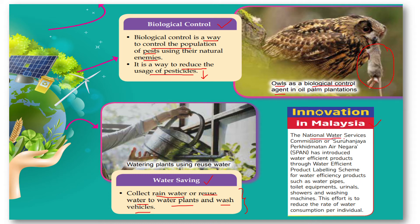Regarding innovation in Malaysia, the National Water Services Commission, or Suruhanjaya Perkhidmatan Air Negara (SPAN), has introduced water-efficient products through a water efficient product labeling scheme. This covers products such as water pipes, toilet equipment, urinals, showers, and washing machines. This effort aims to reduce the rate of water consumption per individual.